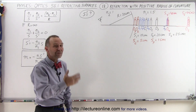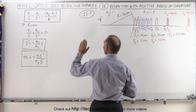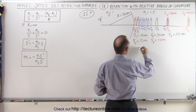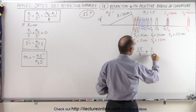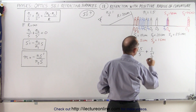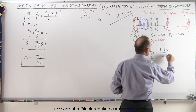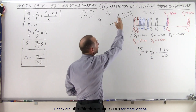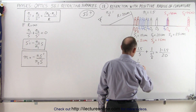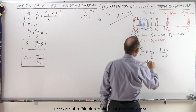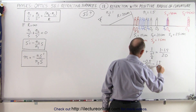Will the image always be on the same side as the object no matter where we place the object? Well, we're about to find out. We use the same equation: n1 = 1.5 divided by 5 — which is now the new object distance — plus 1 over s prime, which is what we're looking for. So now we're looking for s6 prime. That will be equal to 1 minus 1.5 divided by a positive radius of curvature, because again the boundary is convex towards the object. Solving for 1 over s6 prime.